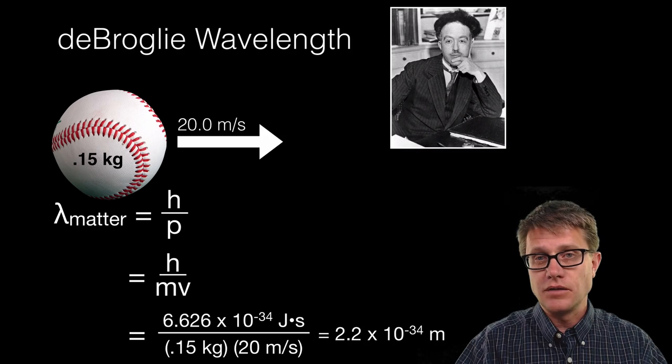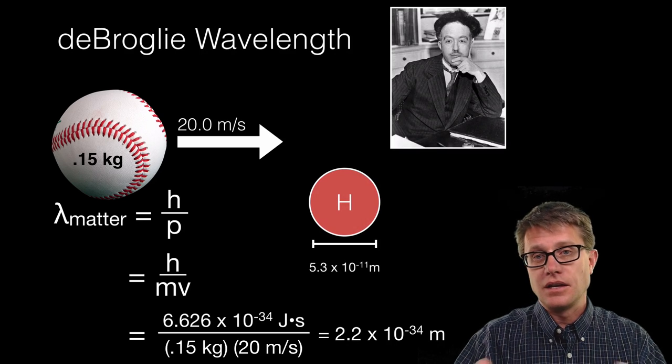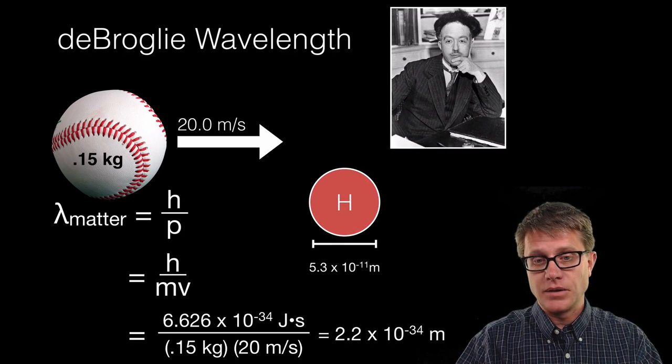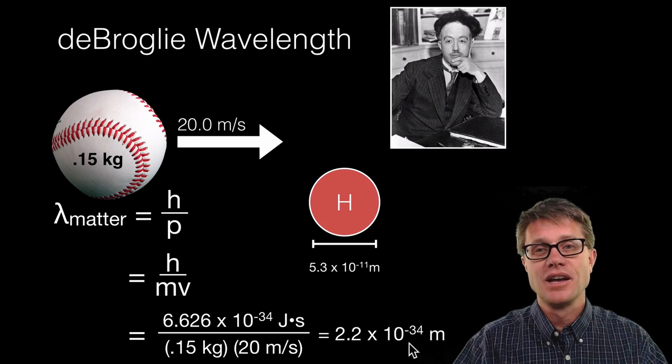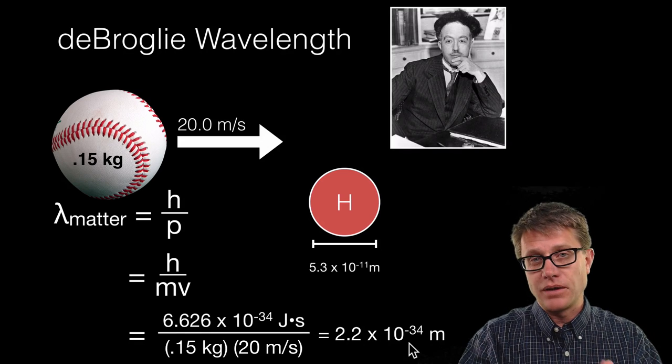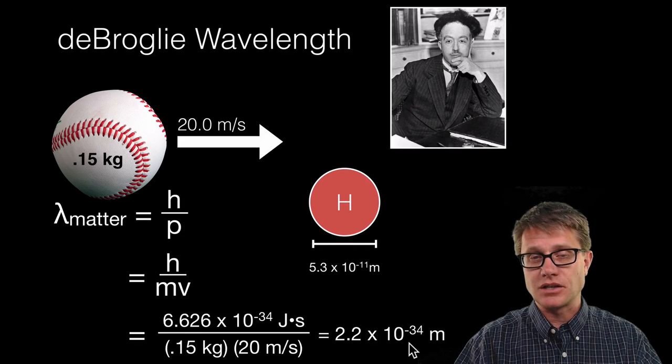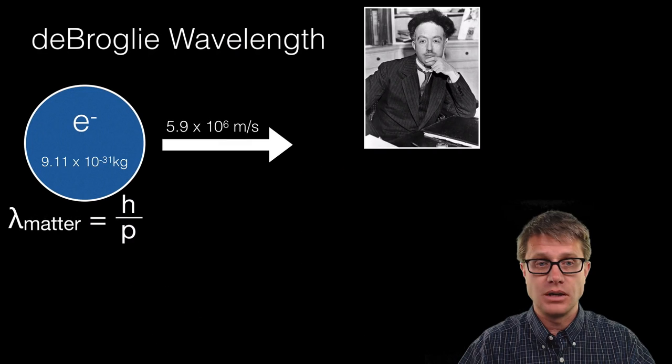10 to the negative 34th. To give you some sense of scale, the diameter of a hydrogen atom is only 10 to the negative 11th. And now we are dealing with 10 to the negative 34th. And so this implies that the wavelength is so small that we essentially could not even measure it, could not even see it.